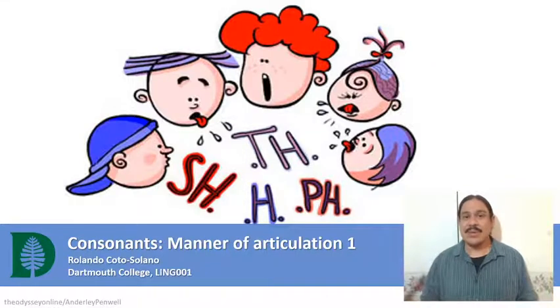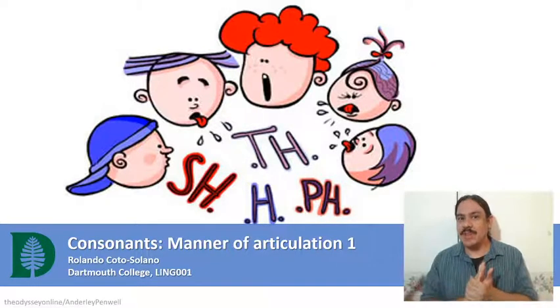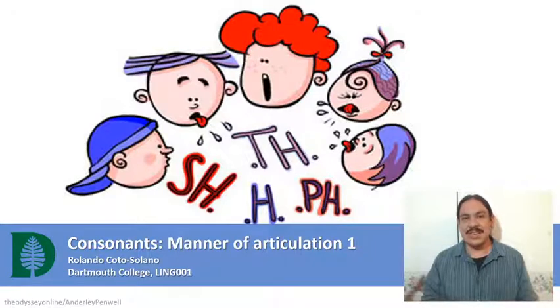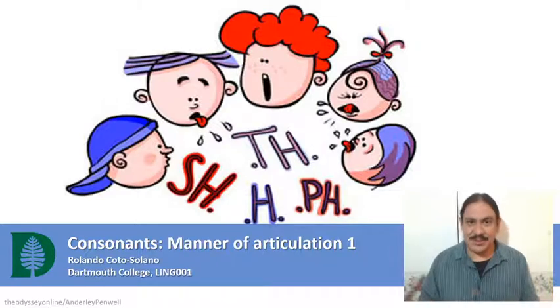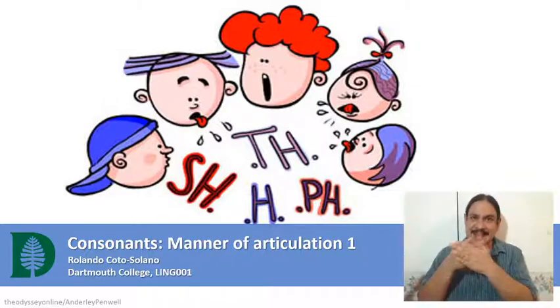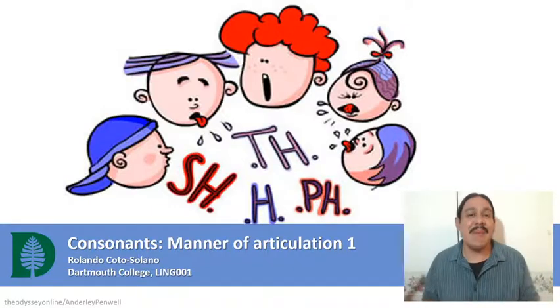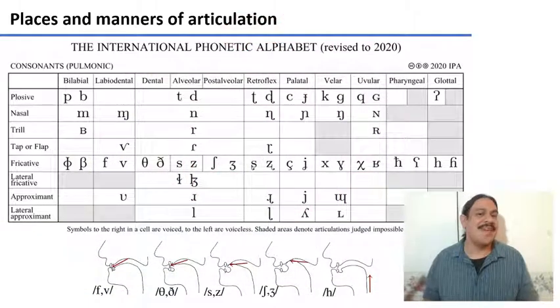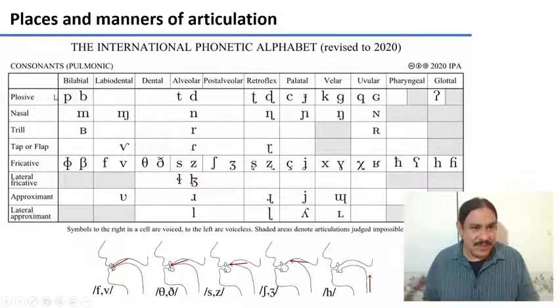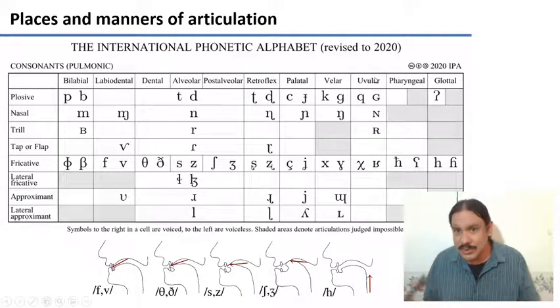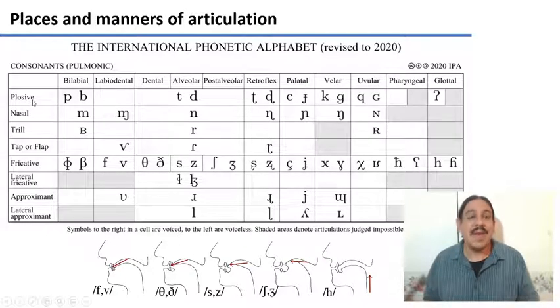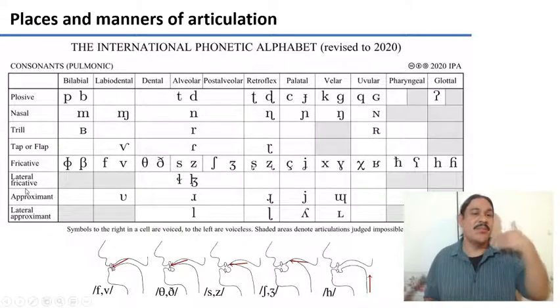And sometimes we have absolute complete blockages as in the t in telephone or toddler where the air stops completely and then it's released in a small explosion. These are manners of articulation and they are the rows of our table. We have as columns the places of articulation by labial, labiodental, velar, uvular and so forth. And then the manners of articulation are the ways in which the air rushes out of your lungs and through your mouth.